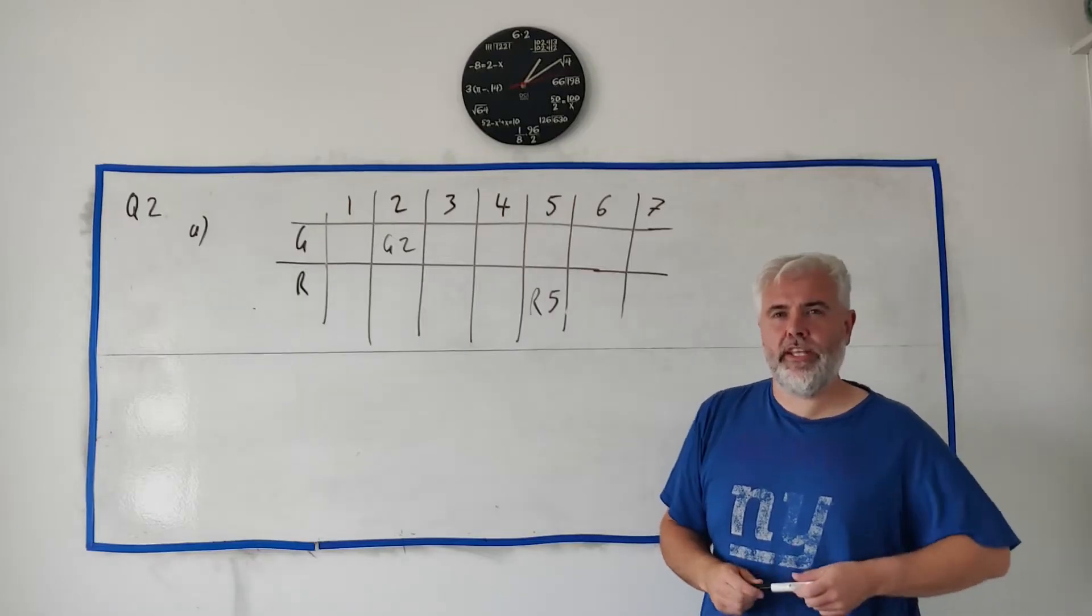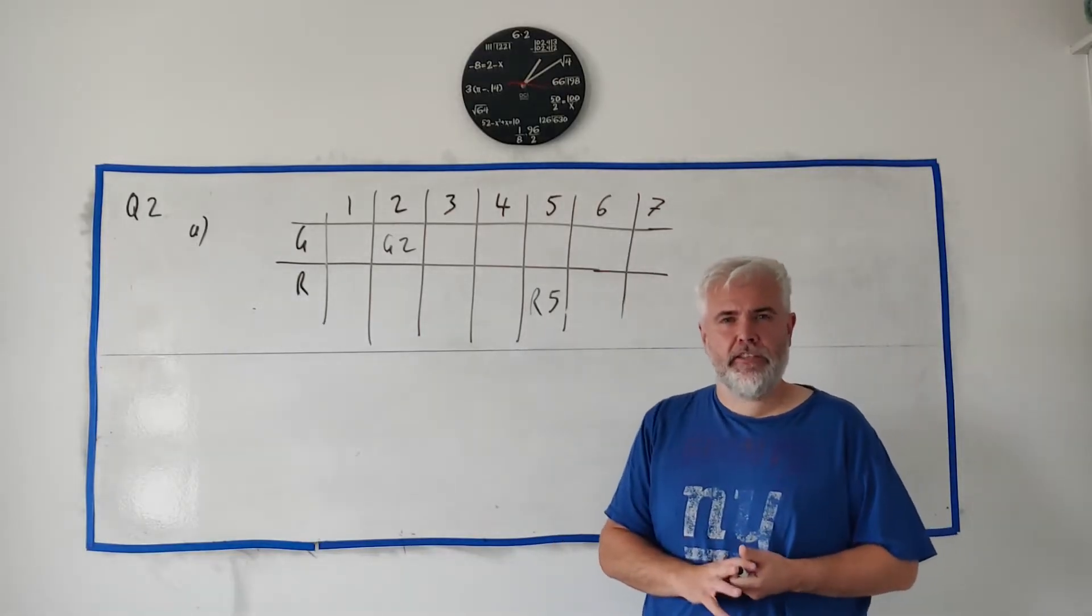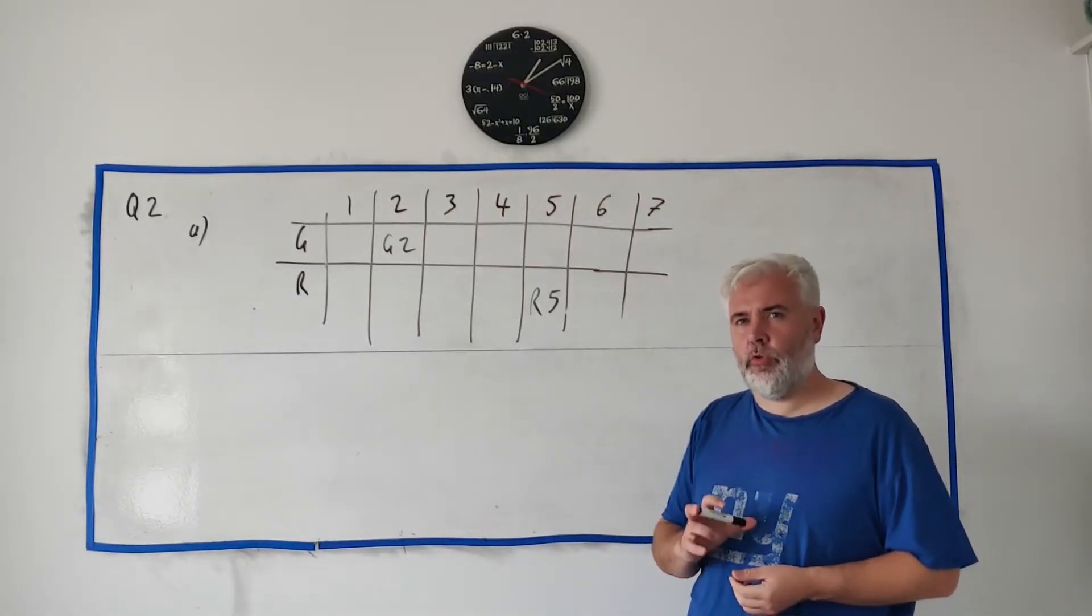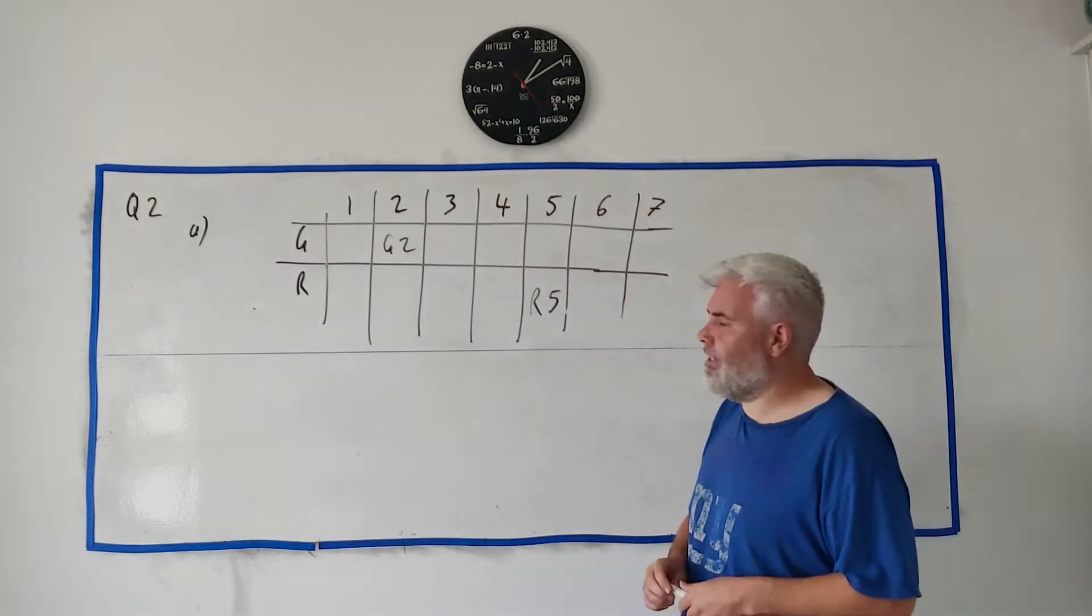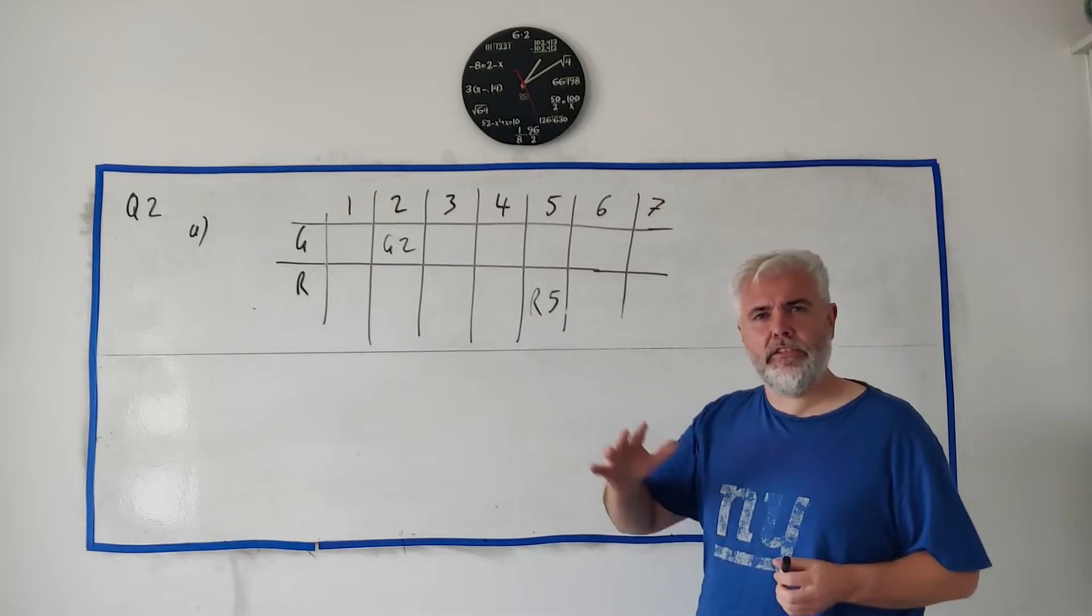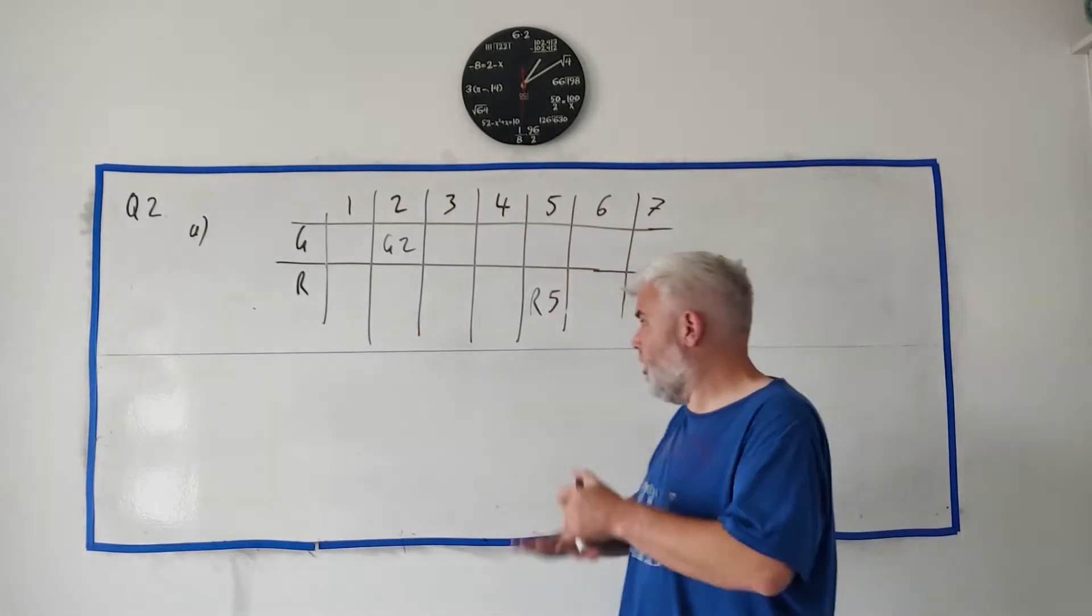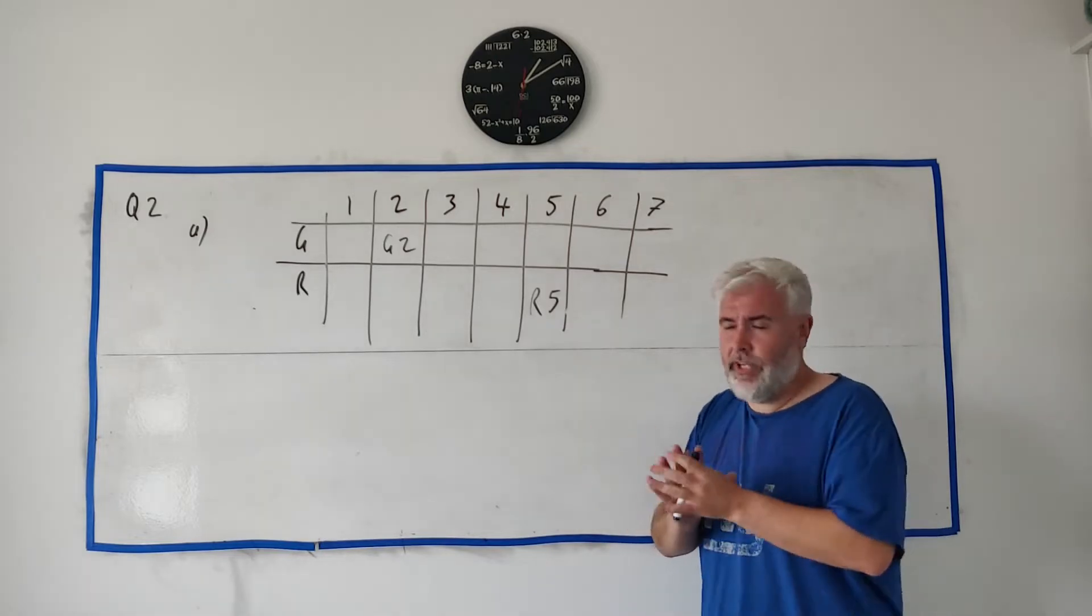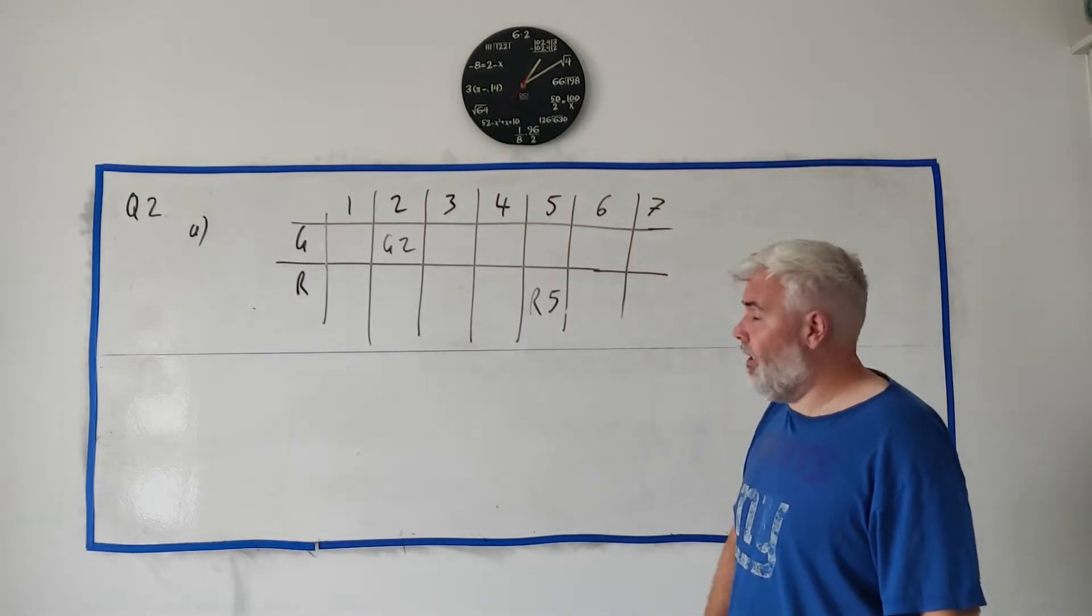For question 2, they tell us Sean is playing a game that has 14 different cards—seven of the cards are green and seven are red, both numbered one to seven. They simply ask us to fill out this table with all that information. There's no trick here; this is actually really simple. Most questions start with something simple to help you get a few marks.